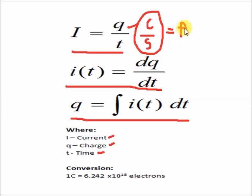There is a conversion here: 1 coulomb is equal to 6.242 times 10 to the 18 electrons.